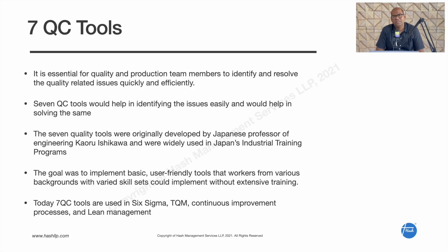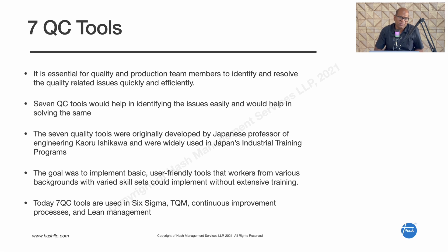Hi there, this is Anant, your trusted Lean Manufacturing Consultant. In this video, we are going to learn about the 7 QC tools and how they can be used. The 7 quality tools were put together by Japanese professor Kaoru Ishikawa and were widely used in Japanese industrial training programs during the late 1960s and 70s, when Japanese companies started implementing the Toyota Production System and focusing on quality initiatives.